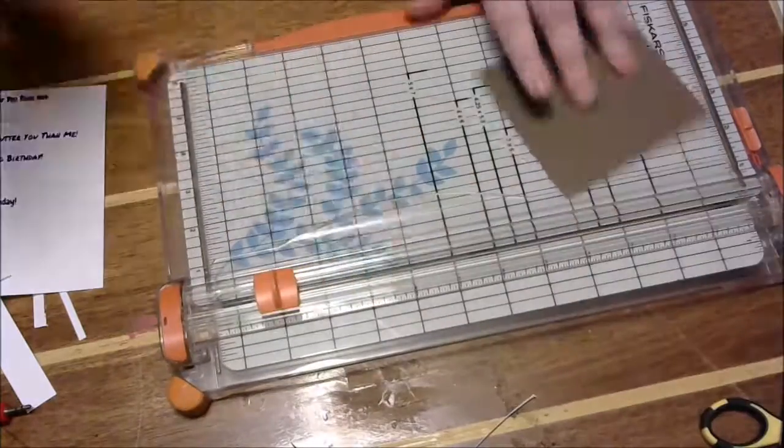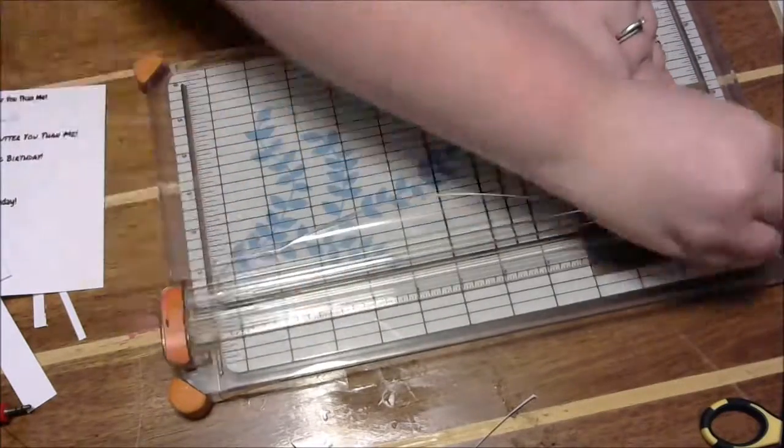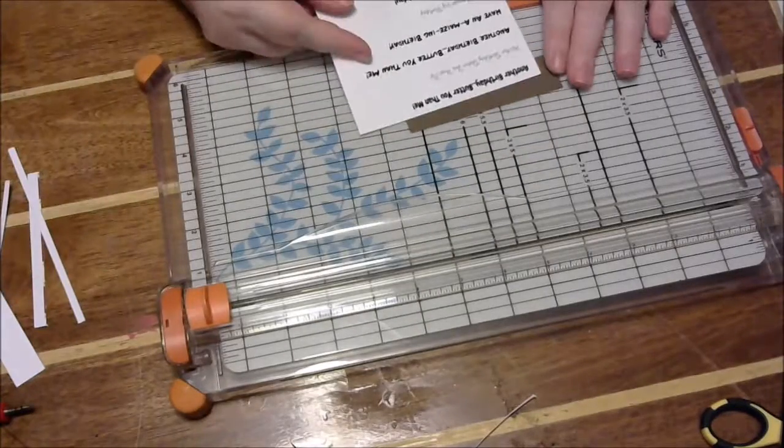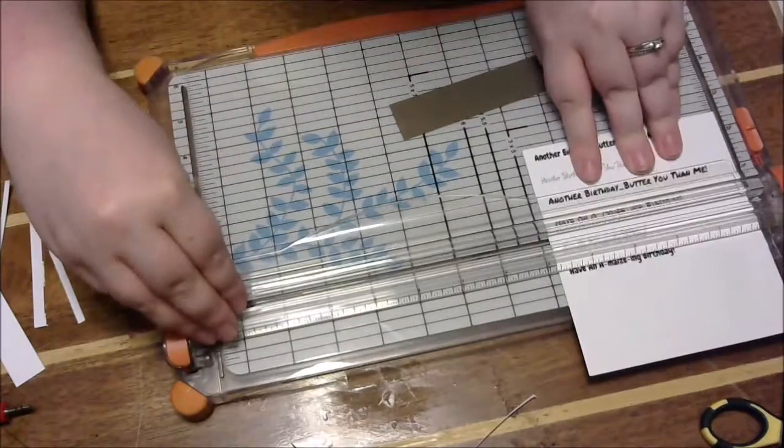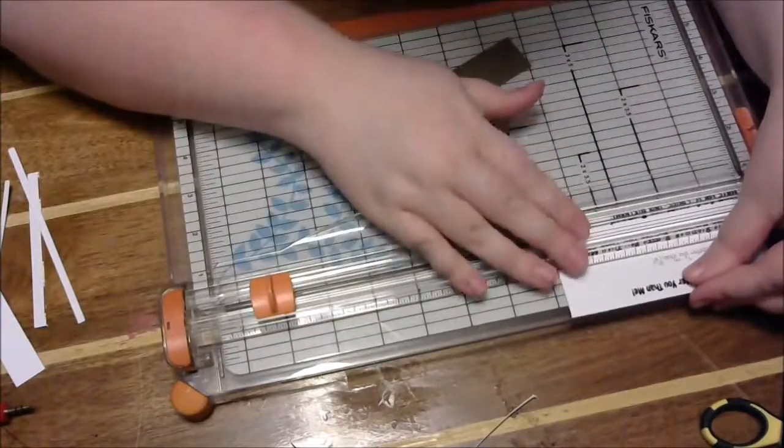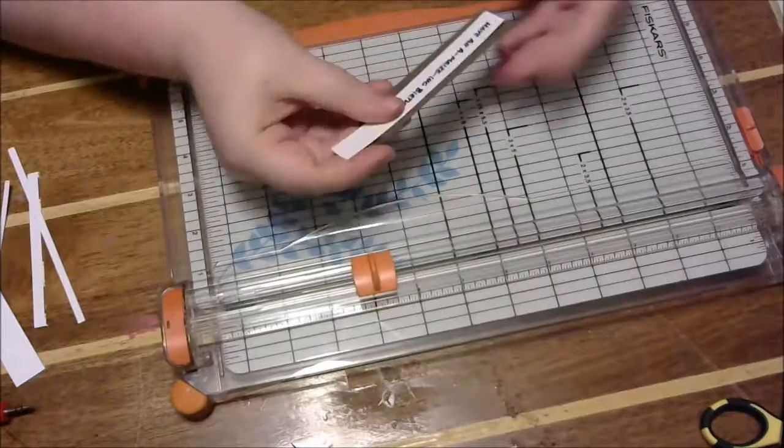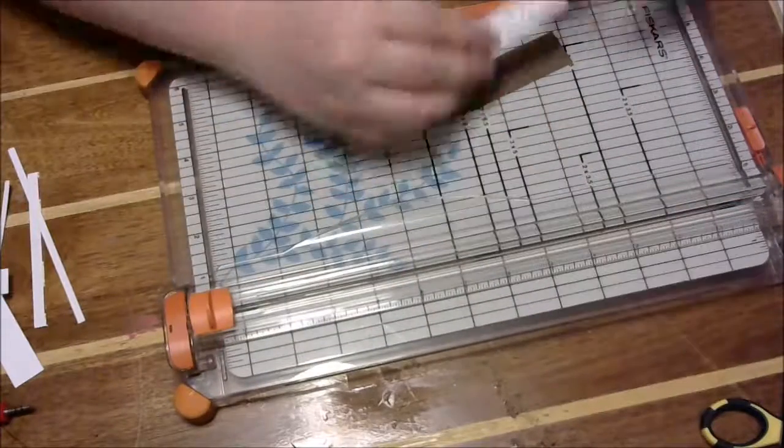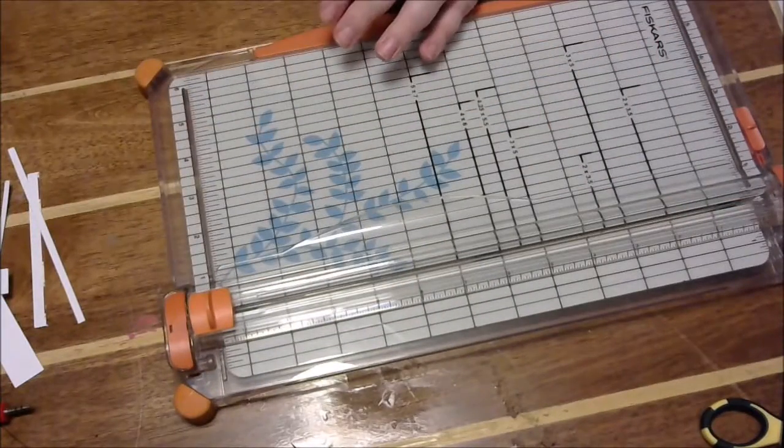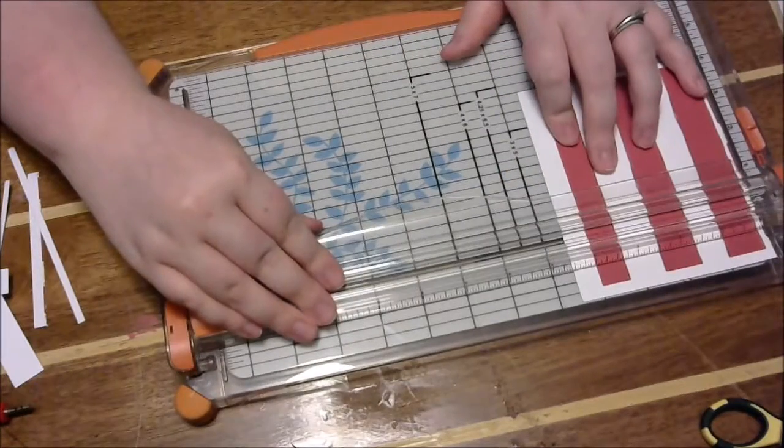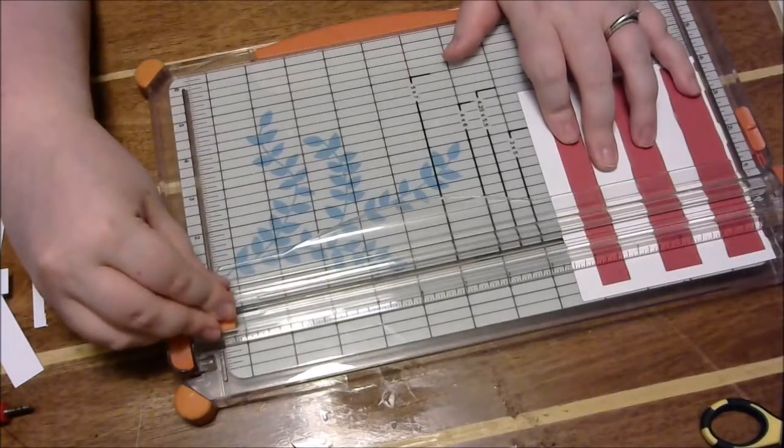I went ahead and made my own digi papers and sentiments and printed those off to make this card that I'm showing you right now. The papers and the sentiment are not included in the August digi, it is just the digi stamp, the little movie goer man.